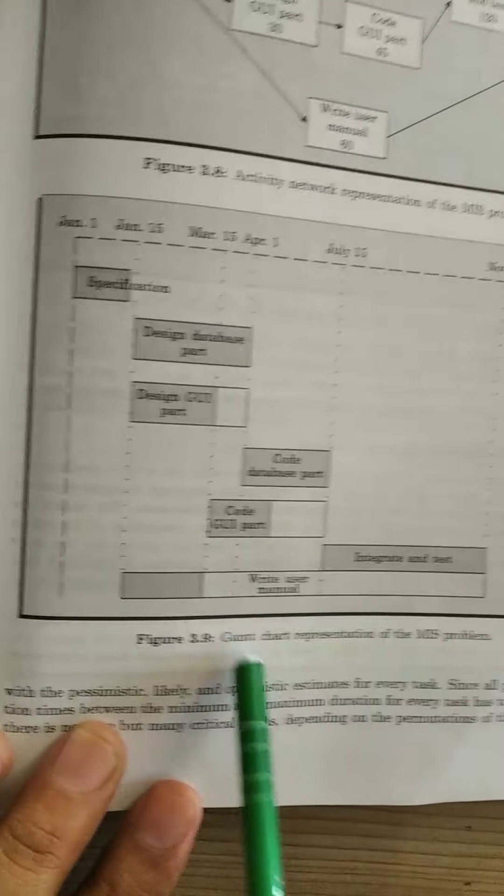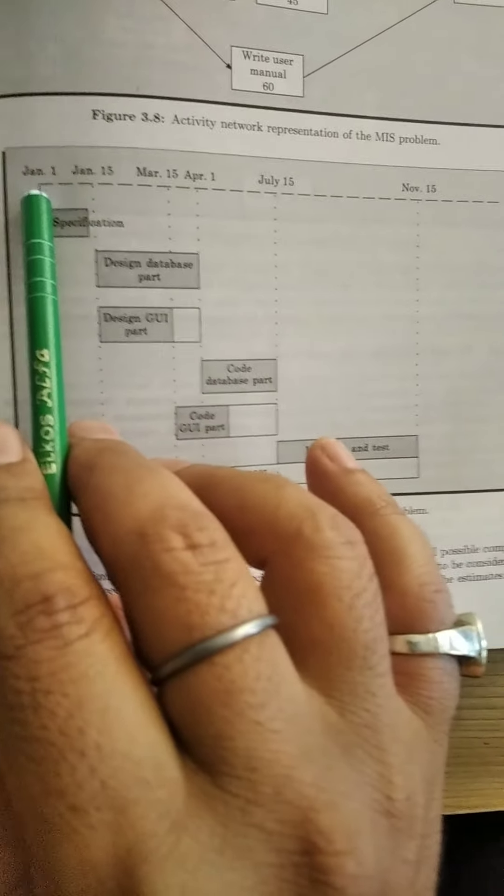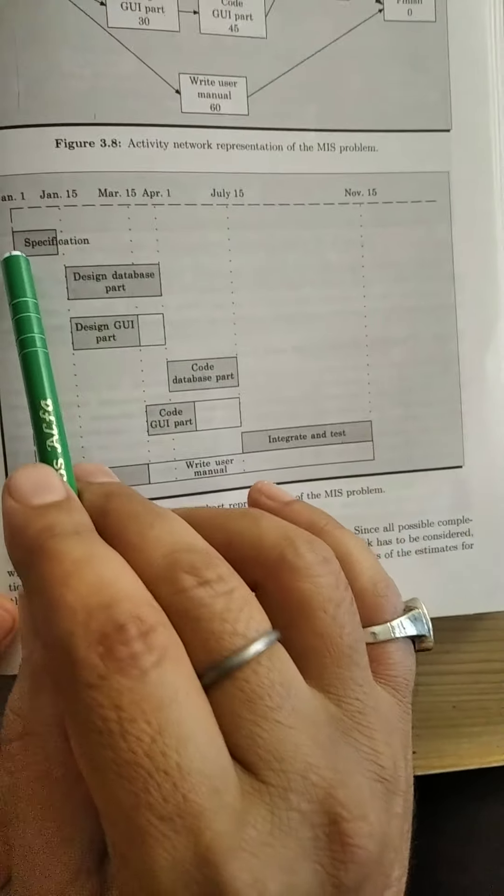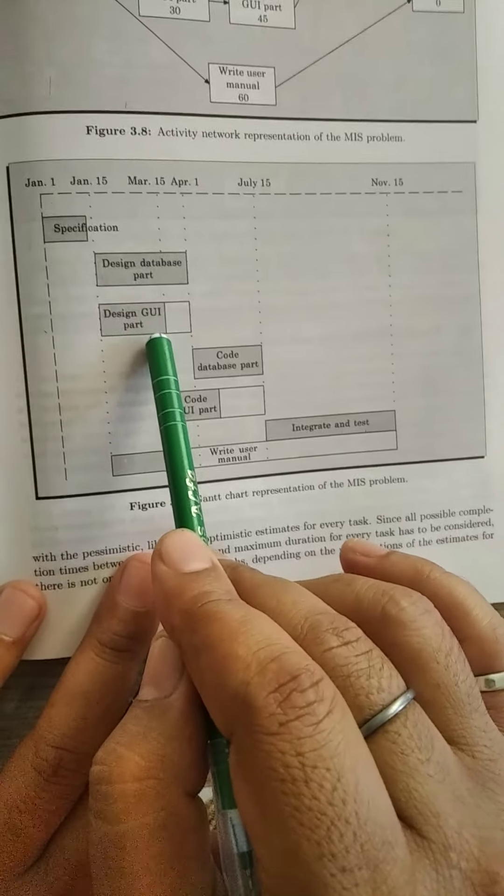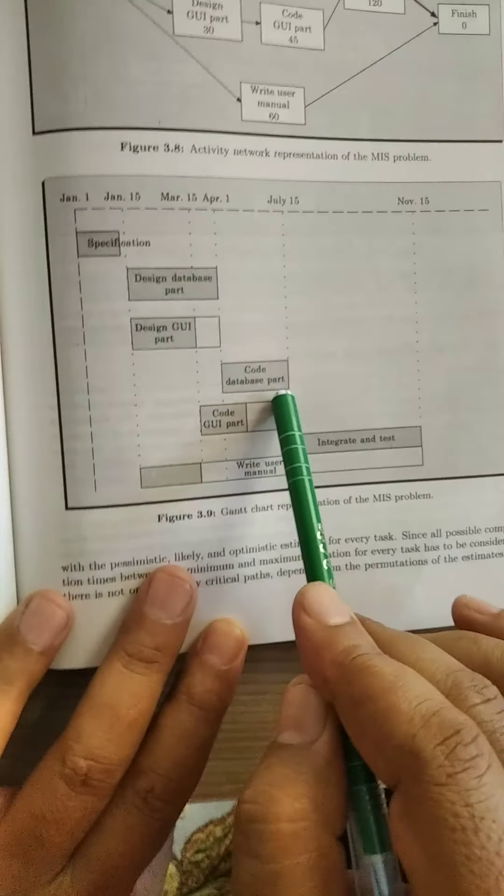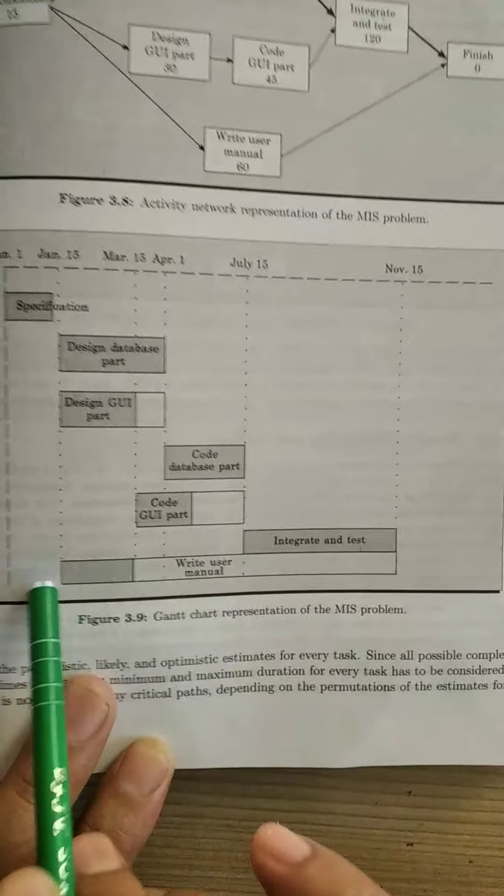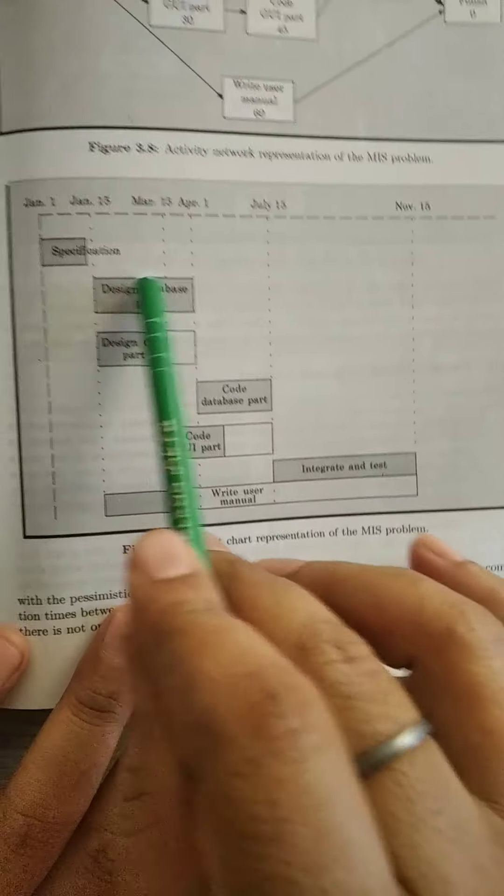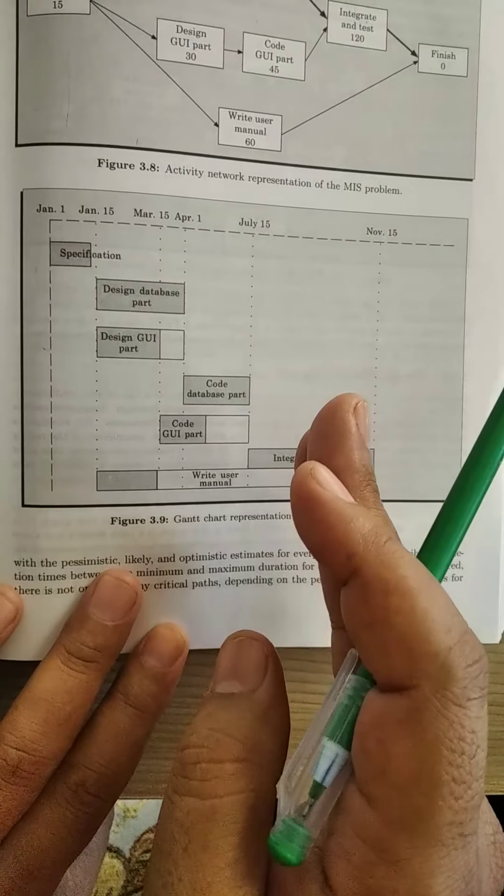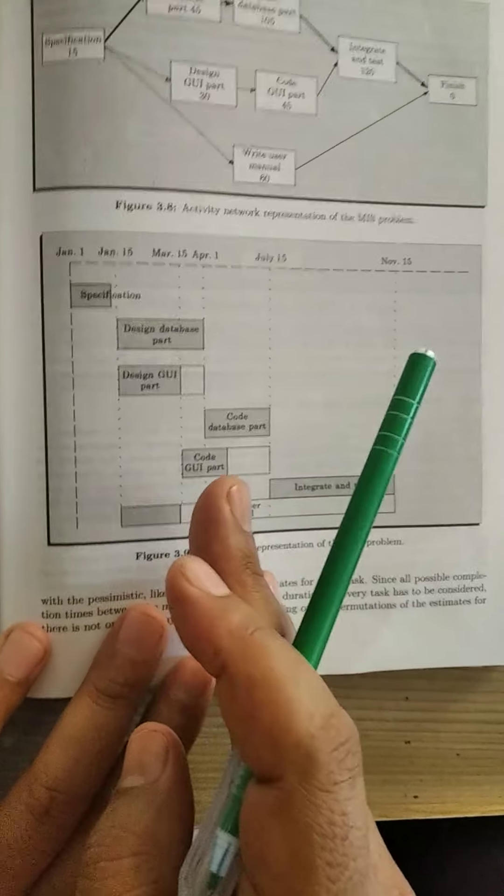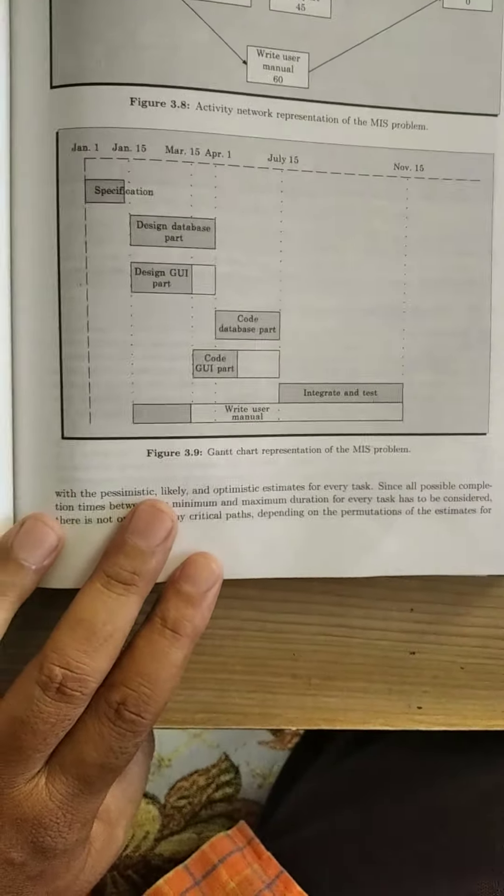Suppose there is a project duration January 1 to November 15: specification, design part, design graphical user interface part, coding database part, coding user interface, integration and testing, and manual. These are the tasks with equally divided time. If any condition occurs where there is a lack of time, we can use the time from other activities or we can cover the time by overtime or increasing the manpower.